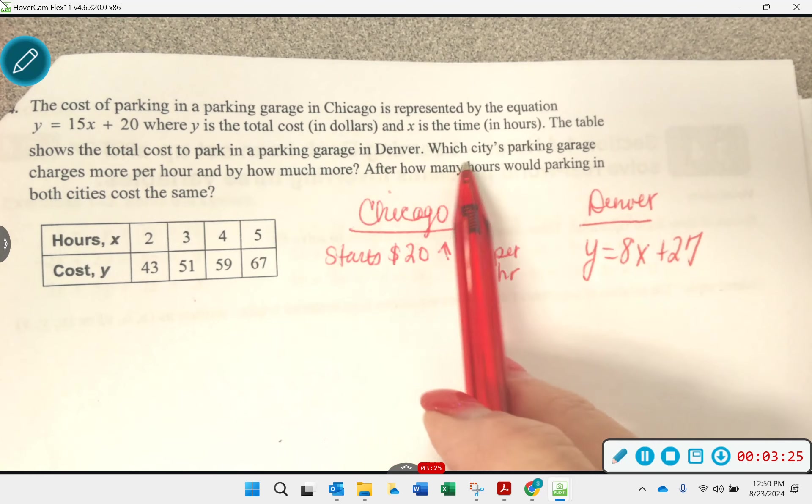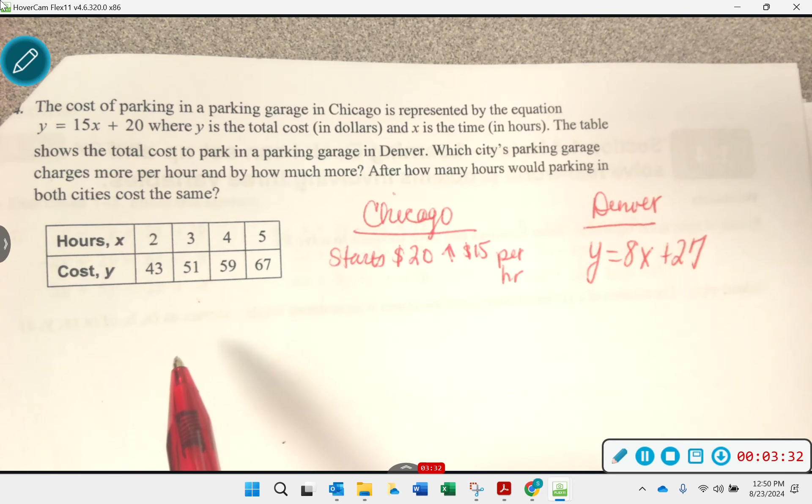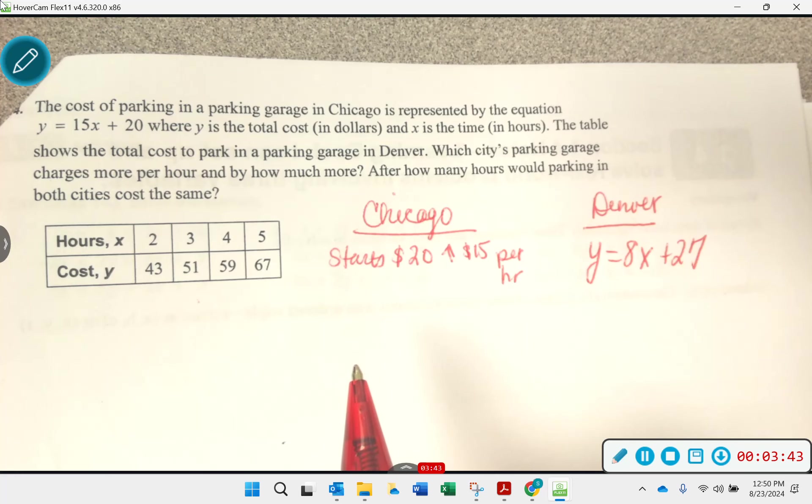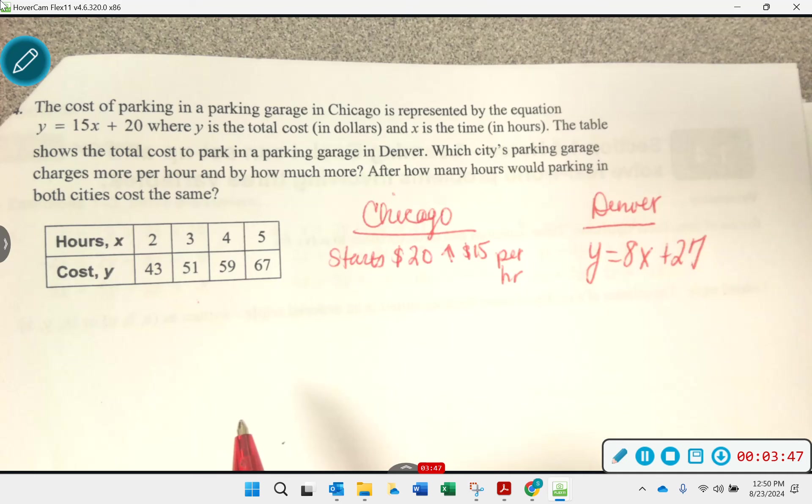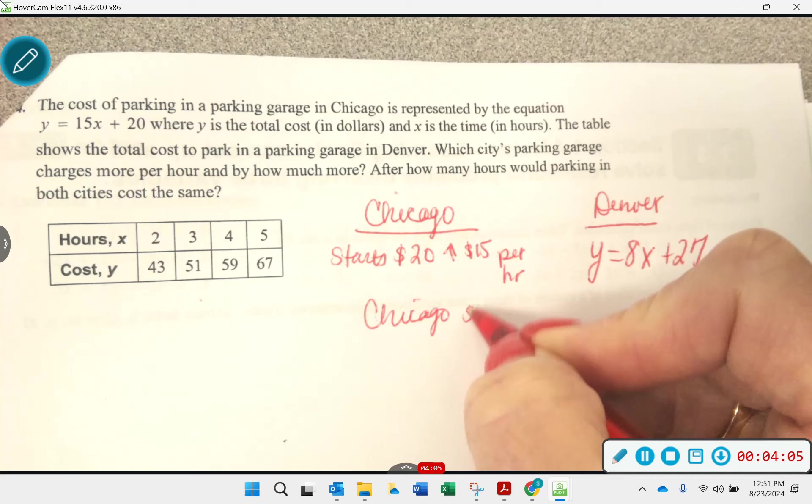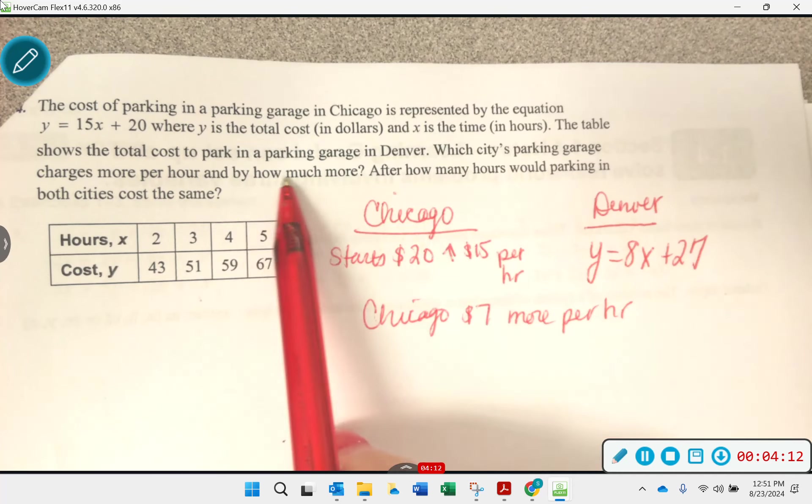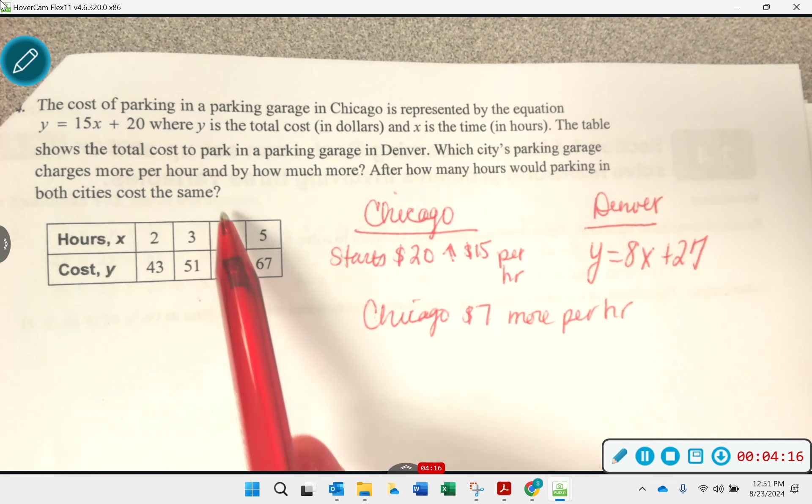All right, so let's see if we can answer some questions now. Which city's parking garage charges more per hour and by how much? Talk that over for a minute with your partner. Which one charges more per hour and how much? Samira, what'd you think? Chicago charges more per hour? Right. Everybody say that? How much more? Seven, yes. So Chicago's going to charge $7 more per hour. Good.